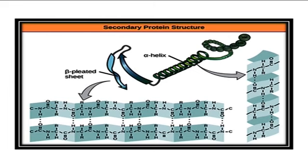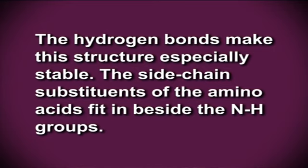Secondary structures. Strands of proteins or peptides have distinct characteristic local structural conformations or secondary structures dependent on hydrogen bonding. The two main types of secondary structures are the alpha helix and the beta sheet, as shown on the screen. Alpha helix is a right-handed coil strand. The side chain substituents of the amino acid groups in the alpha helix extend to the outside. Hydrogen bonds form between the oxygen of the C=O of each peptide bond in the strand and the hydrogen of the NH group of the peptide bond from amino acids below it in the helix. The hydrogen bonds make this structure specially stable. The side chain substituents of the amino acids fit in beside the NH groups.